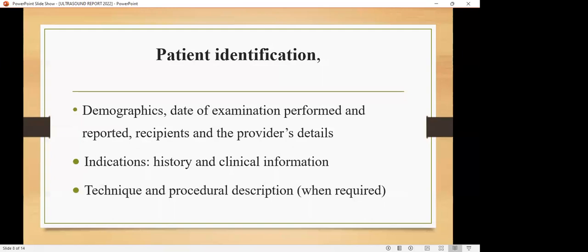It should also have indication, which should include history and clinical information of the patient. This is the most important area, actually. If a patient has no clinical indications, it's quite difficult for someone to give a report because you don't know what you are basing on. So it's always important that you look at the request form, make sure these details are there. That's when it becomes relevant and you report properly so that a patient gets quality work. This will be addressed to the clinician. In the technical procedural description, if it's required, you can also put it there.